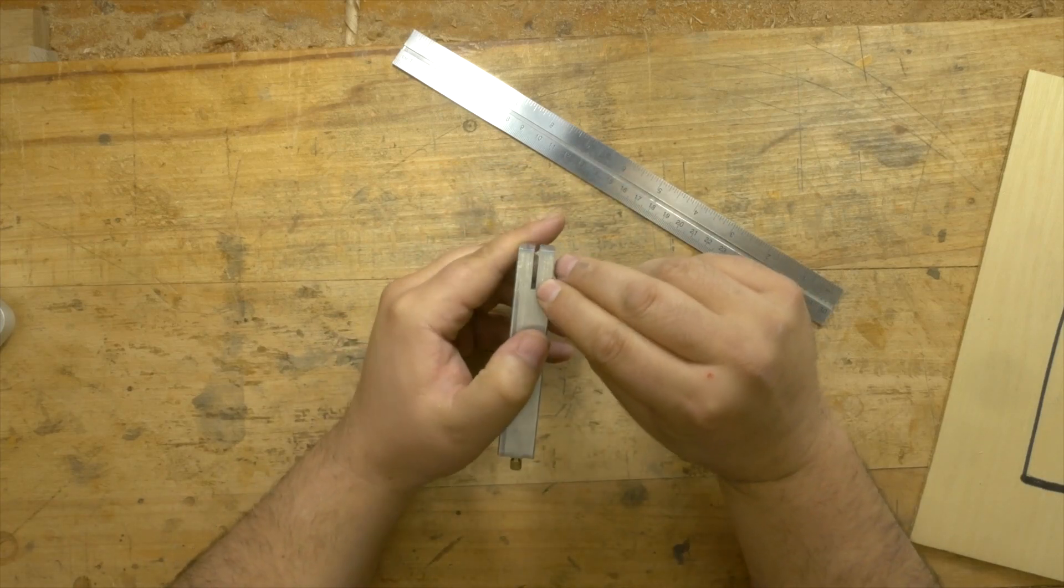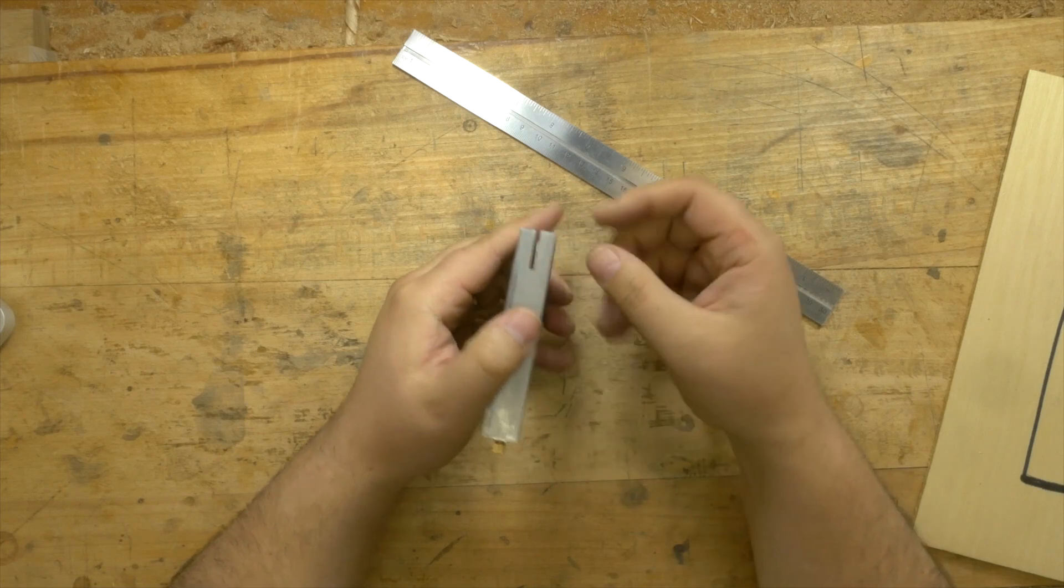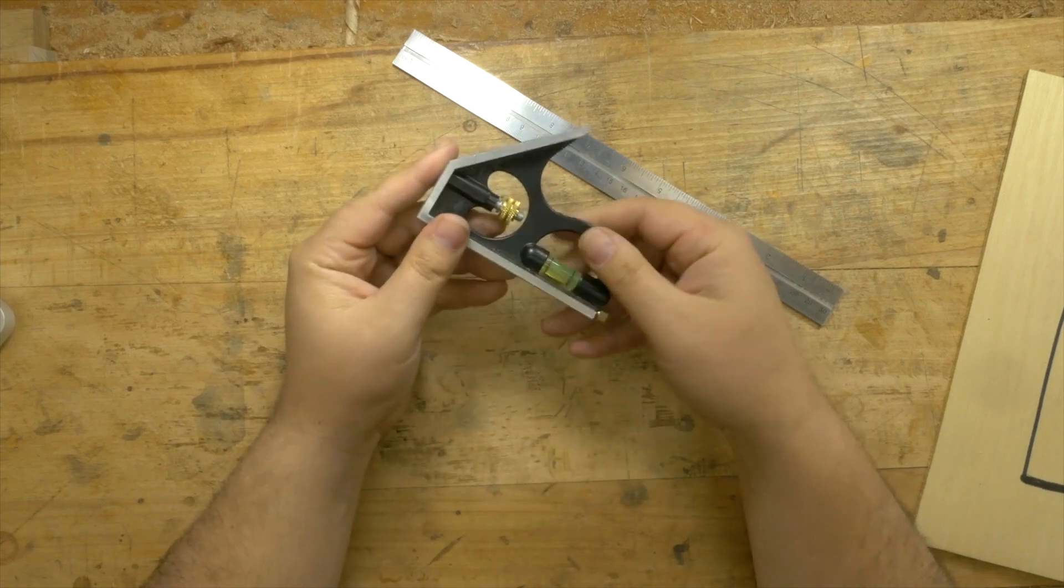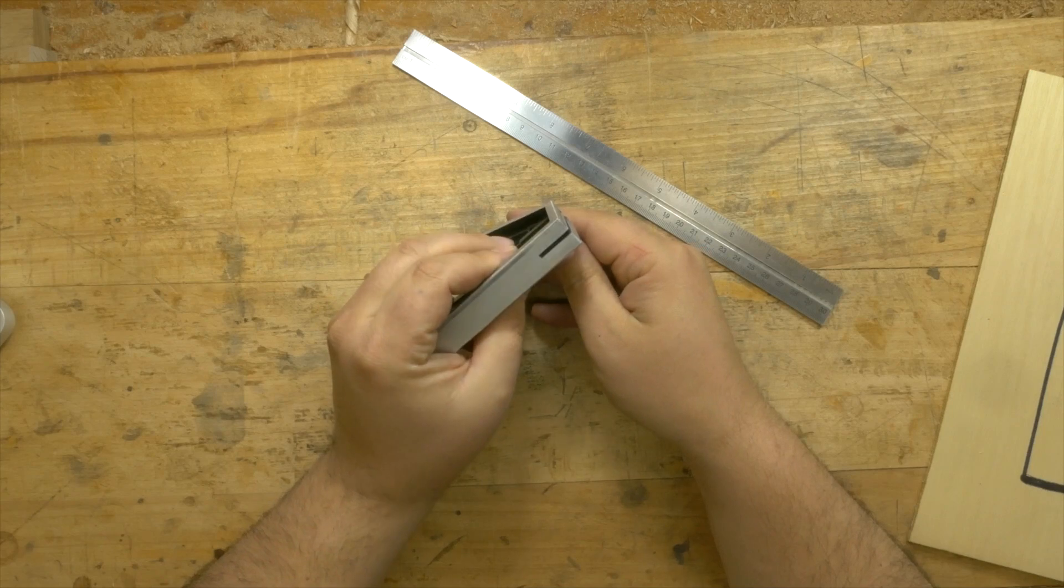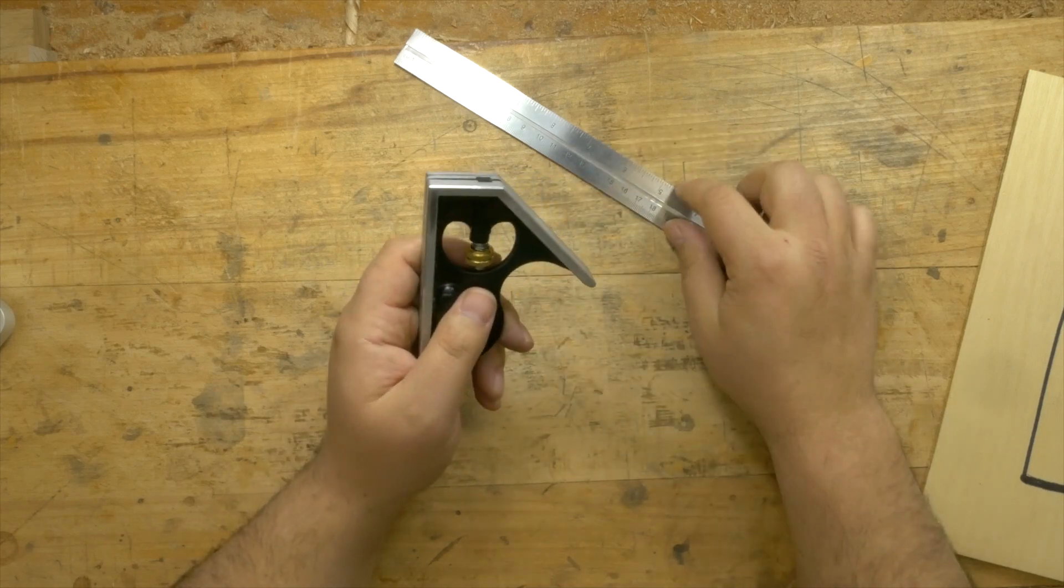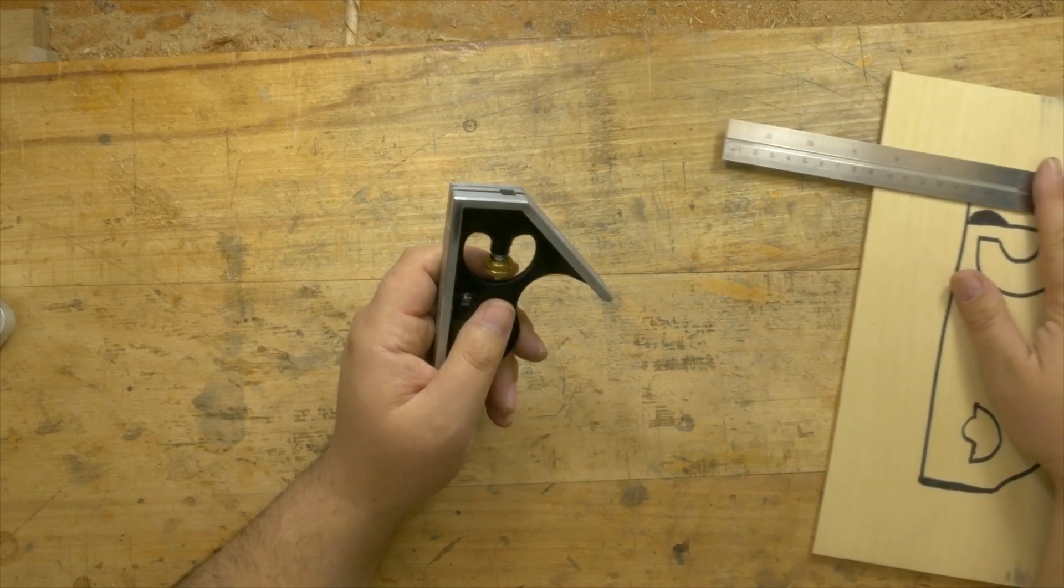A lot of people think that the ruler rides on this shoulder, but there's actually two raised nubs that the ruler registers against. It's just about impossible for me to get the camera in here for you to see it, so I'm going to use a drawing to demonstrate.